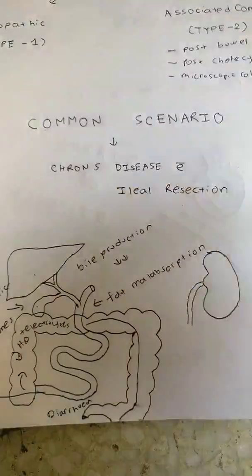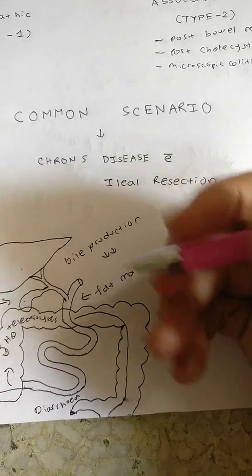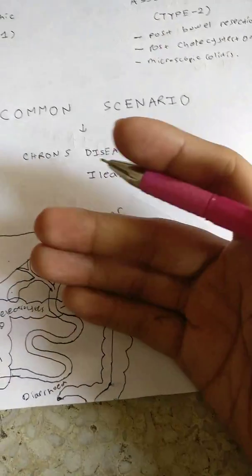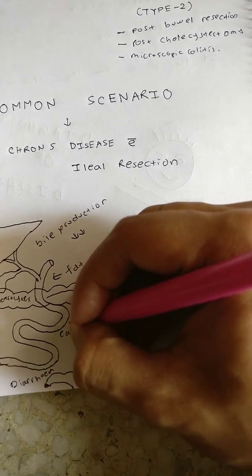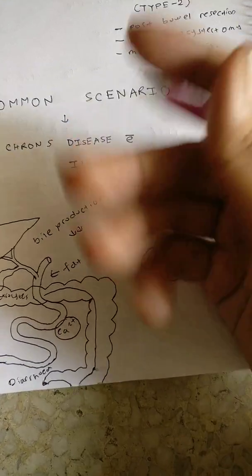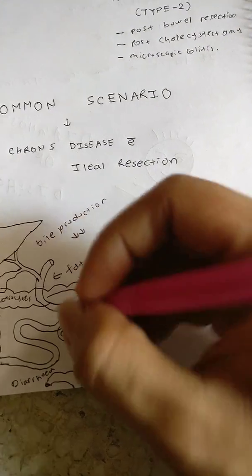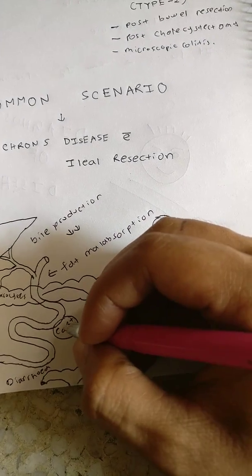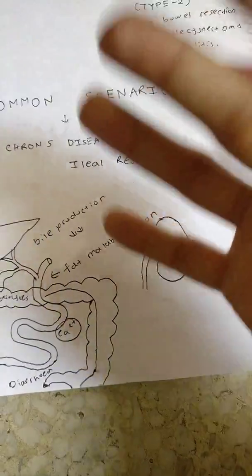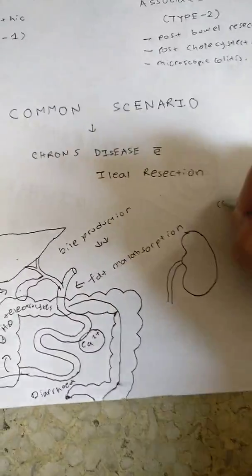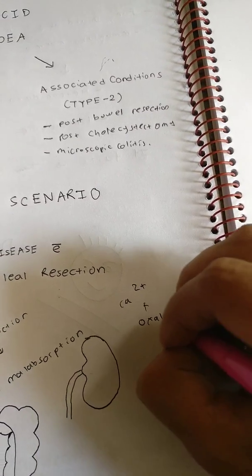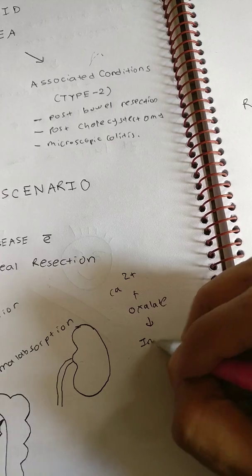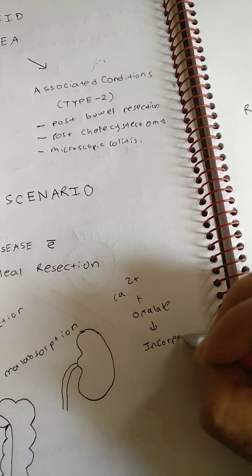Last but not least, the bile salt has a function: it usually binds with the calcium present. This unabsorbed bile salt usually binds with this calcium. Therefore the calcium usually binds to oxalate and they're incorporated into the intestinal lumen.